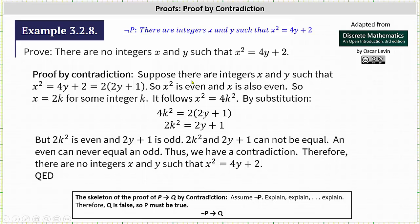Therefore, the original statement P is true, meaning there are no integers x and y such that x squared equals 4y plus 2. I hope you found this helpful.